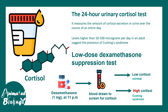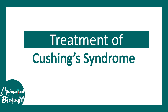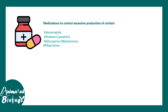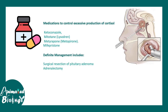For treatment of Cushing syndrome, certain medications such as ketoconazole can be used to control excessive cortisol production. However, the definitive management includes surgical resection of a pituitary adenoma or adrenalectomy for an adrenal tumor.